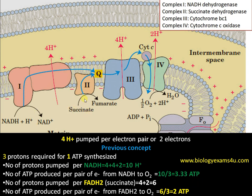Now let us see what happens when FADH2 passes through the electron transport chain. FADH2, formed during the conversion of succinate to fumarate in the Krebs cycle, directly enters Complex 2 (succinate dehydrogenase), bypassing Complex 1. Therefore, the number of protons pumped per FADH2 is 4 + 2 = 6 — fewer protons are pumped. That is why ATP synthesized from FADH2 is lower: 6 ÷ 3 = 2 ATP.